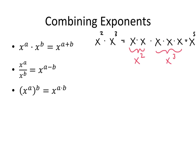What about this next one? x to the a divided by x to the b equals x to the a minus b. And again, if you're not sure about that, let's do it with some small numbers. What if I had x to the sixth divided by x squared?